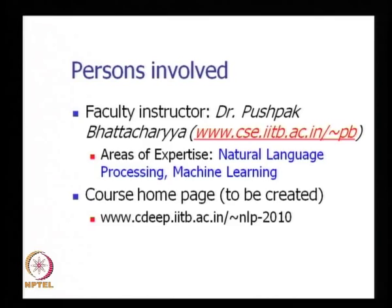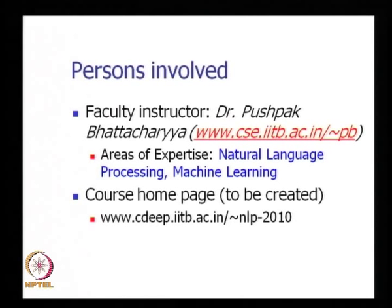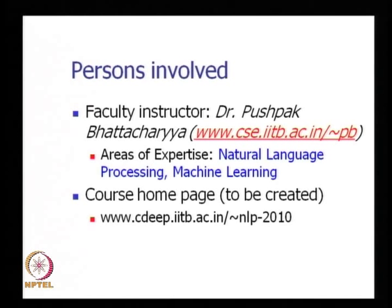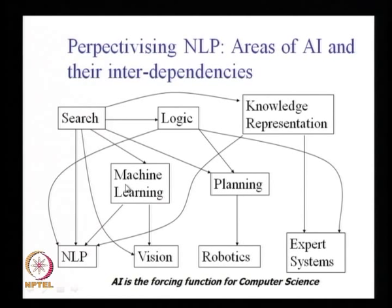The faculty instructor's area of research is natural language processing and machine learning, and the course home page will be soon created. Natural language processing comes in the left bottom corner of the AI areas diagram, which is dependent on machine learning, knowledge representation, logic and search. AI is the forcing function for computer science, and natural language processing happens to be the forcing function for AI data itself.